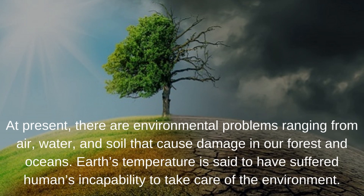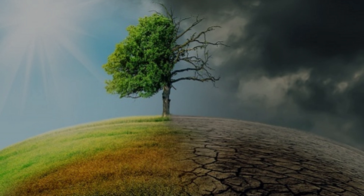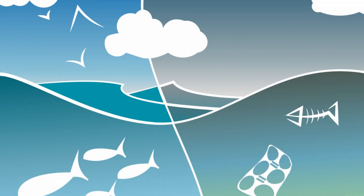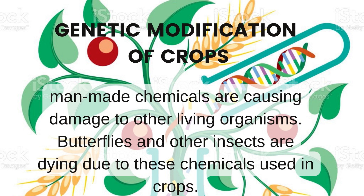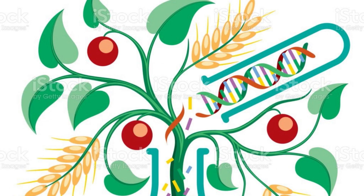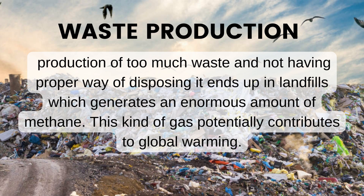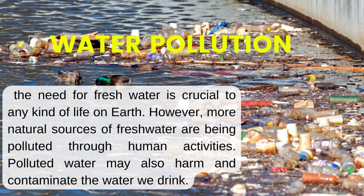At present, there are environmental problems ranging from air, water, and soil that cause damage in our forest and oceans. Earth's temperature is said to have suffered from humans' incapability to take care of the environment. The different environmental concerns that must be addressed: Genetic modification of crops — man-made chemicals are causing damage to other living organisms; butterflies and other insects are dying due to these chemicals used in crops. Waste production — production of too much waste, and not having a proper way of disposing it, ends up in landfills, which generates an enormous amount of methane, a gas that potentially contributes to global warming. Water pollution — the need for fresh water is crucial to any kind of life on Earth; however, more natural sources of fresh water are being polluted through human activities, and polluted water may also harm and contaminate the water we drink.